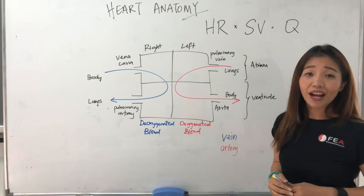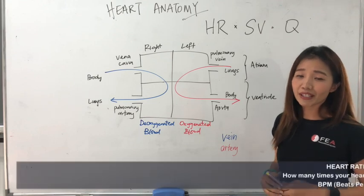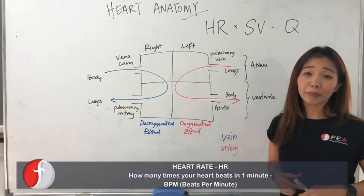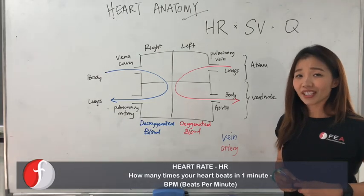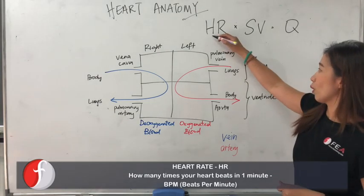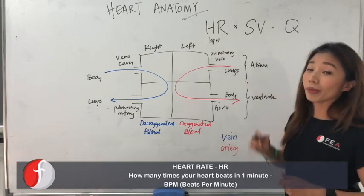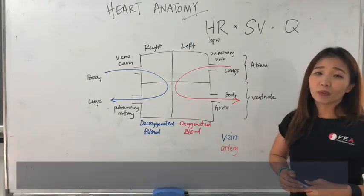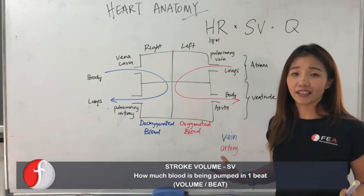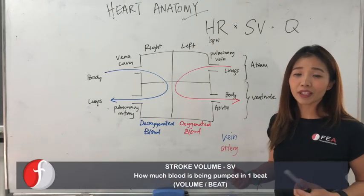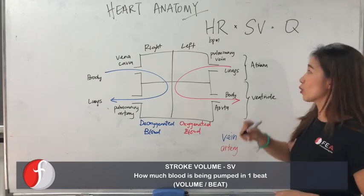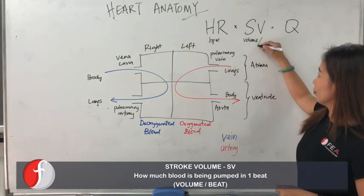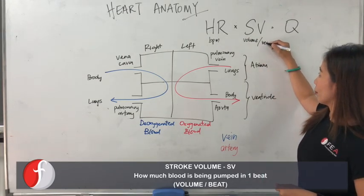So first of all, let's look at heart rate. Heart rate basically means how many times your heart actually beats in one minute. So how do we measure that? We use what we call beats per minute. For stroke volume, what it means is how much blood is being pumped in one beat. So that is what we call volume per beat.